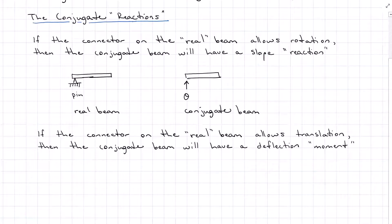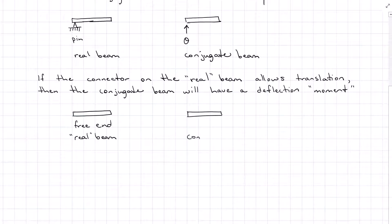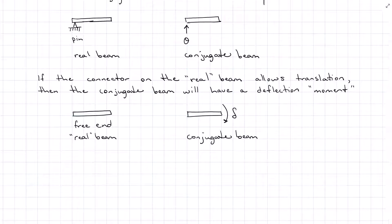If the connector on the real beam allows for translation, then the conjugate beam is going to have a deflection moment. For example, if we have a free end on the real beam, then on our conjugate beam we're going to have a moment that represents deflection. A free end also allows for slope, so there would also be a theta.